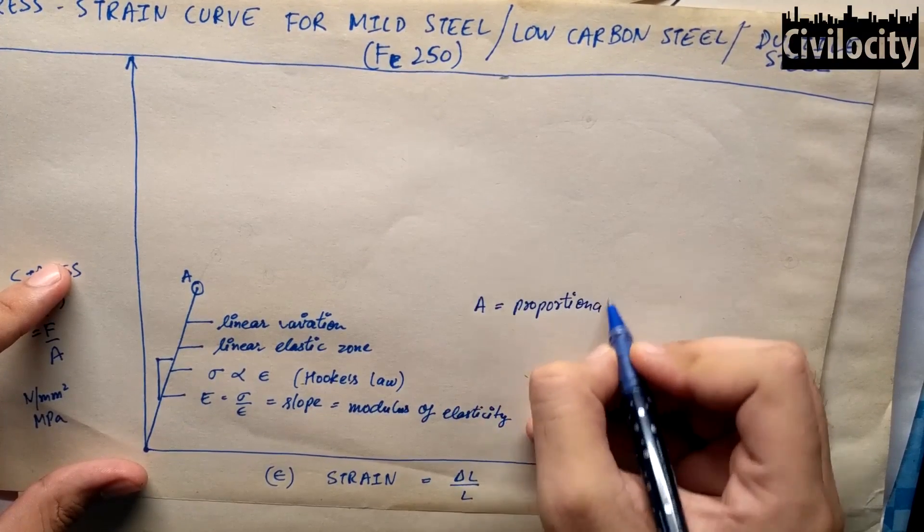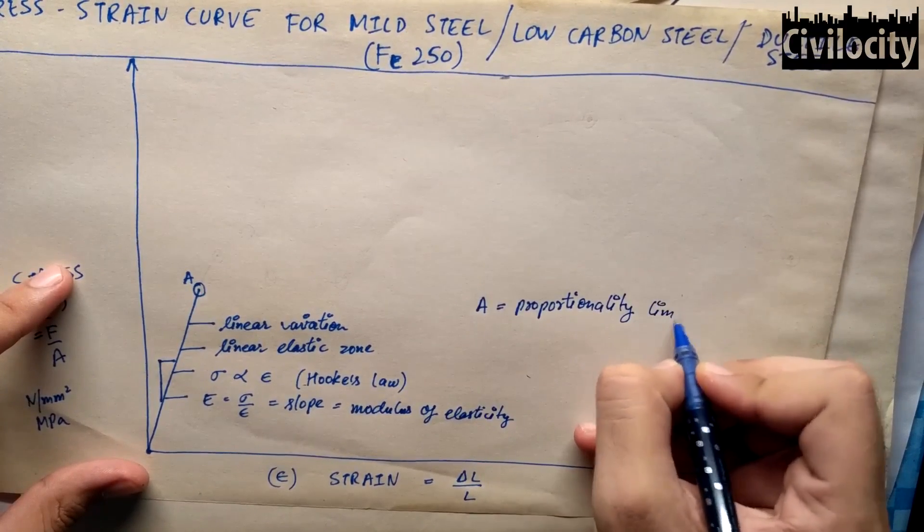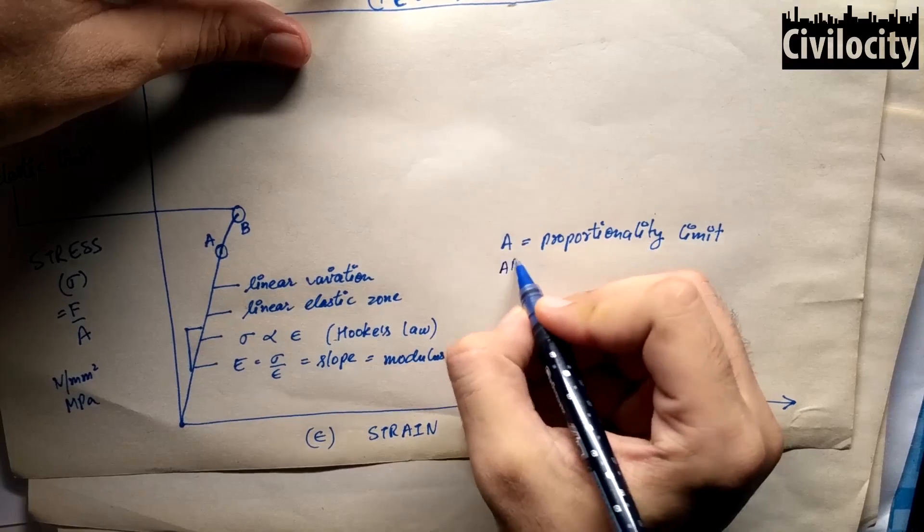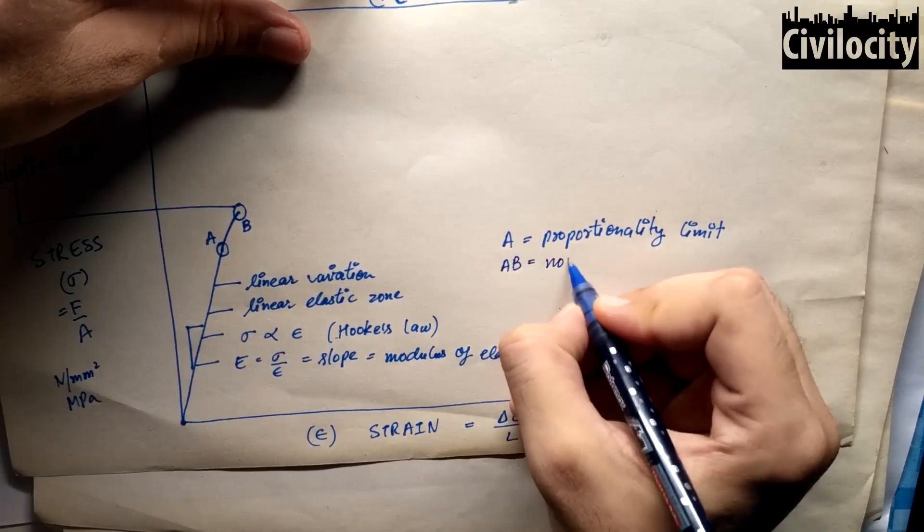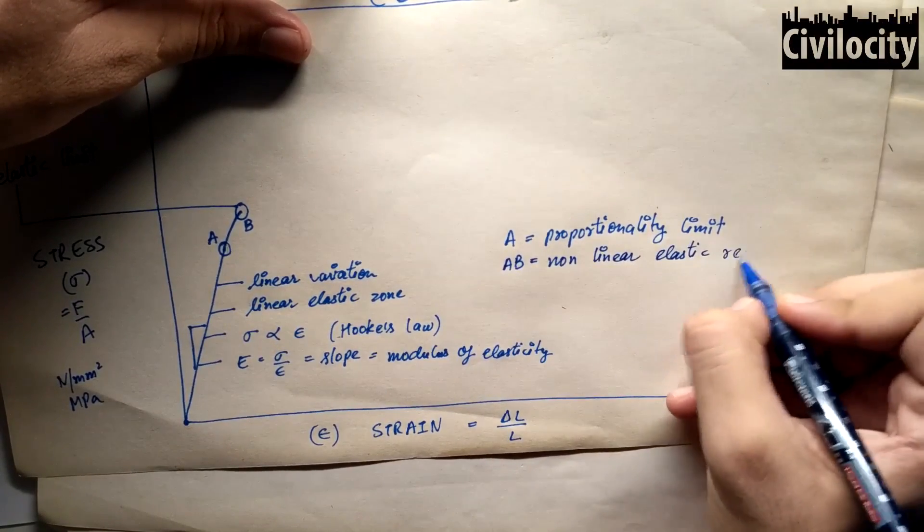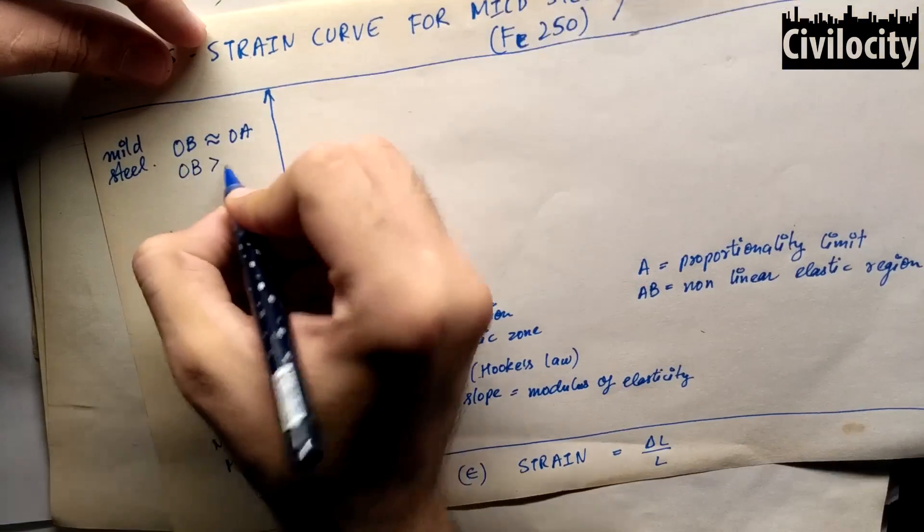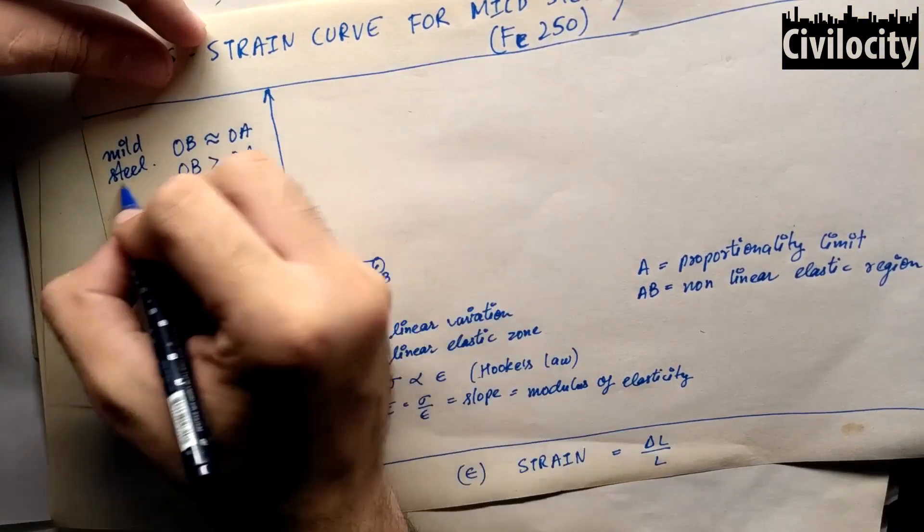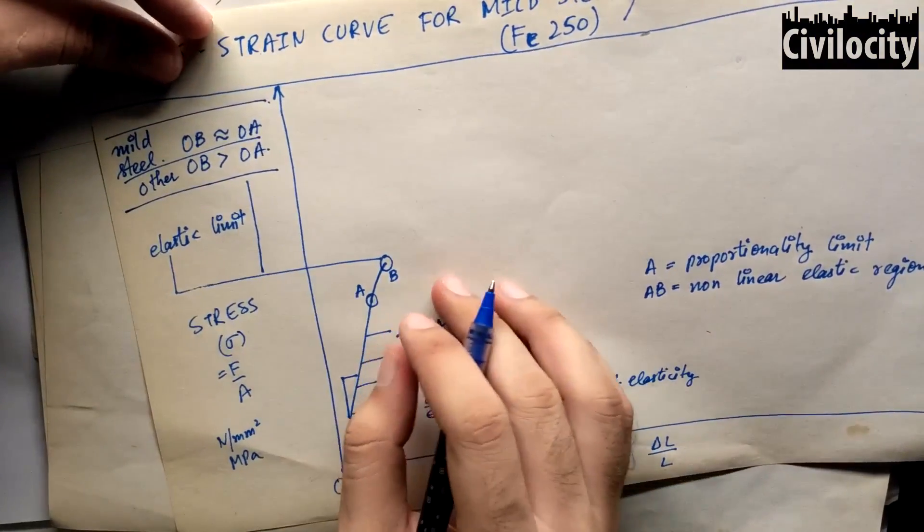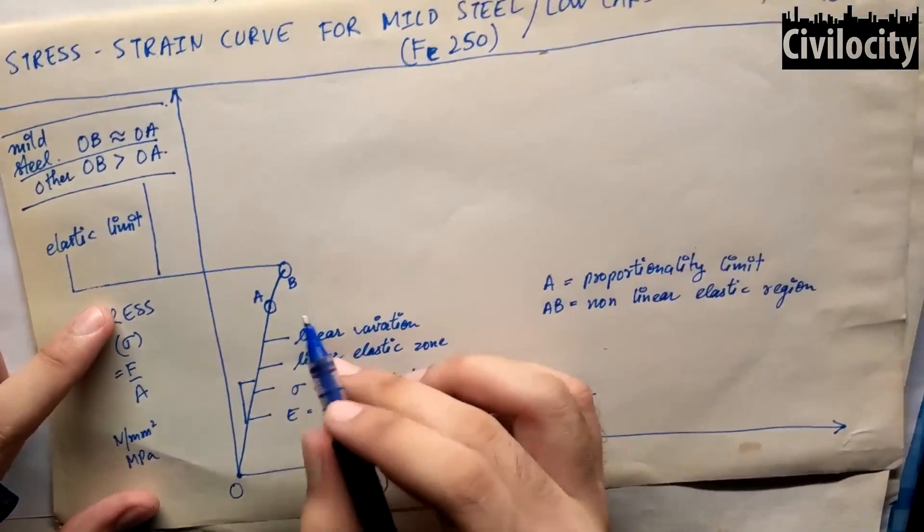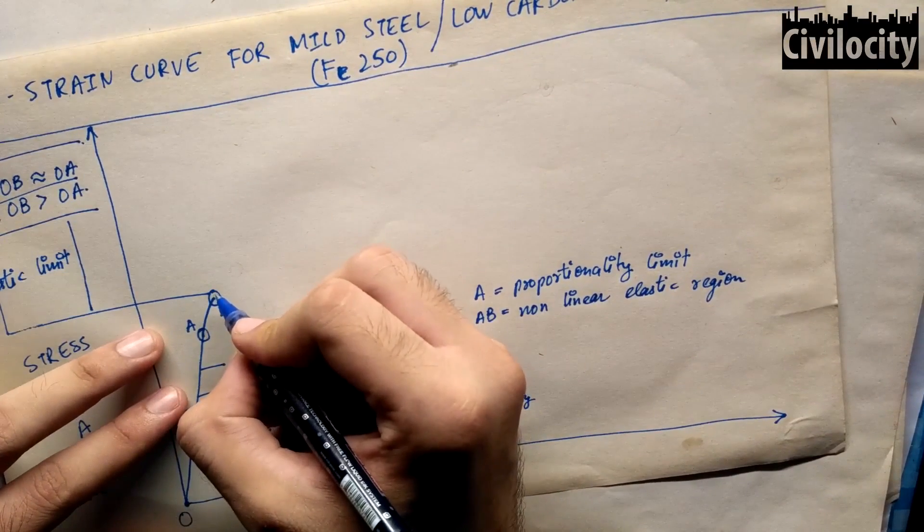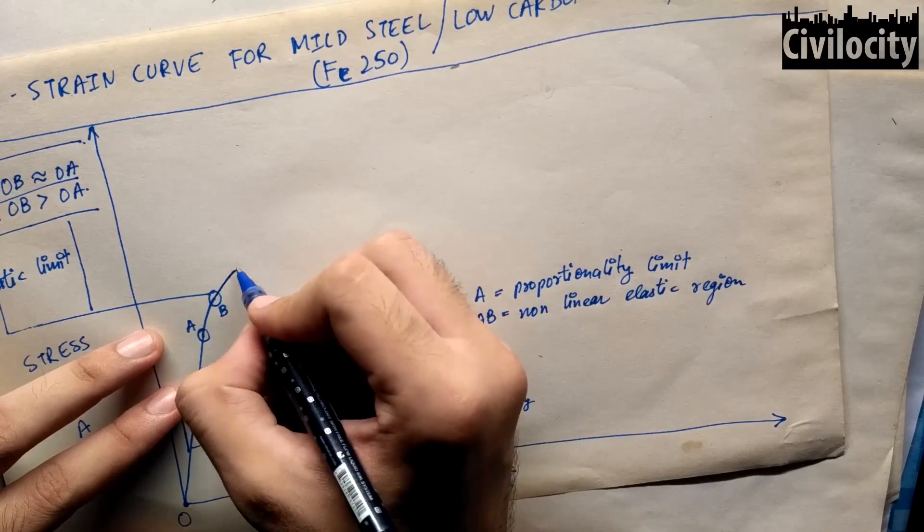On further application of stress, our material reaches the elastic limit and we name it as point B. Up to this point the material is elastic and this region is non-linear elastic region. The path from A to B is slightly curved. Therefore Hooke's law is not valid in this region. In actual engineering graphs, this point B is very near to point A for mild steel but for other materials B is farther from A. Just to demonstrate point A and B, I have drawn point B farther from A but in actual conditions they are very near.